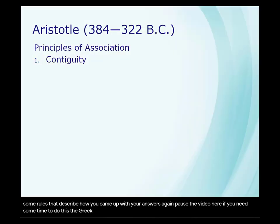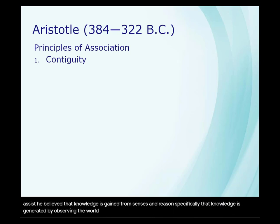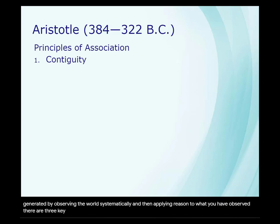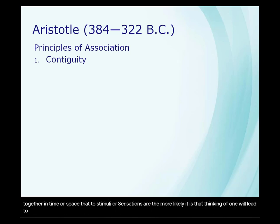The Greek philosopher Aristotle is widely acknowledged as the first associationist. He believed that knowledge is gained from senses and reason — specifically, that knowledge is generated by observing the world systematically and then applying reason to what you have observed. There are three key Aristotelian principles of association. The first principle is contiguity: the closer together in time or space that two stimuli or sensations are, the more likely it is that thinking of one will lead to thinking of the other.